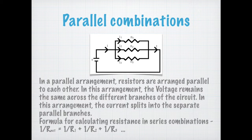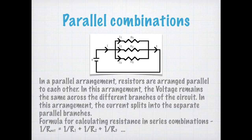Let me repeat that. The current through all the branches is different — as many branches as you have — it's different depending on resistance. You can use Ohm's law to calculate the current. While the potential difference across all the branches remains the same.